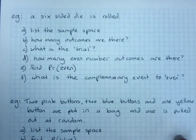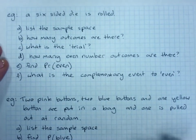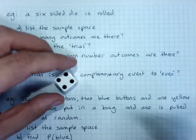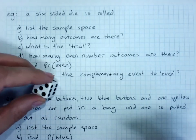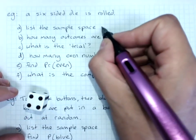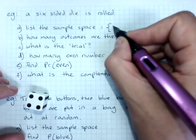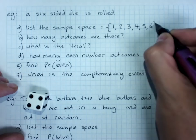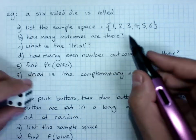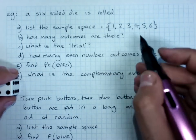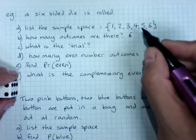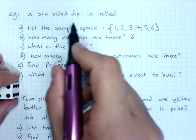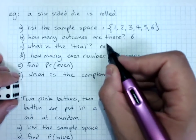So a couple of example questions. We roll a six-sided die. So what's the sample space? I could get in curly brackets a one, a two, a three, a four, a five, or a six. How many outcomes are there? Six. What is the trial? That was the experiment that was done - rolling a die.